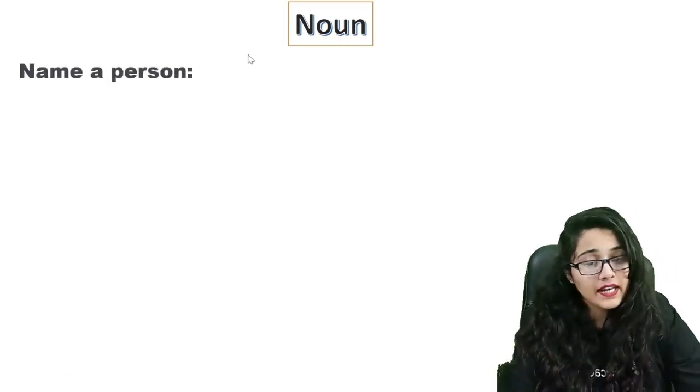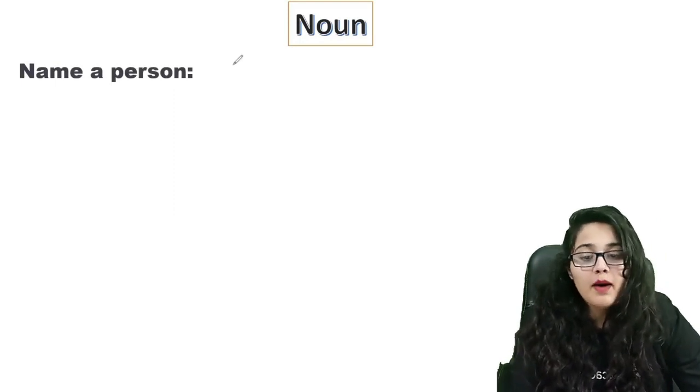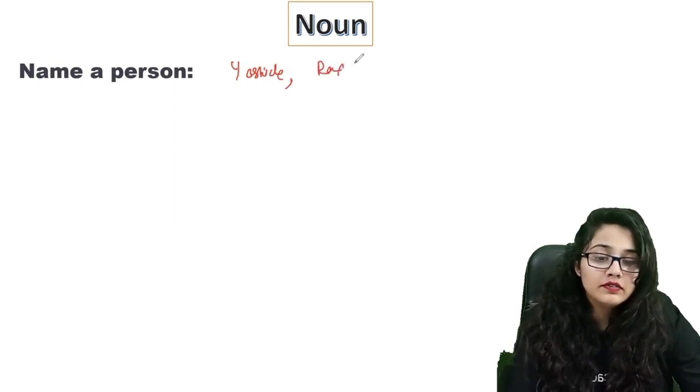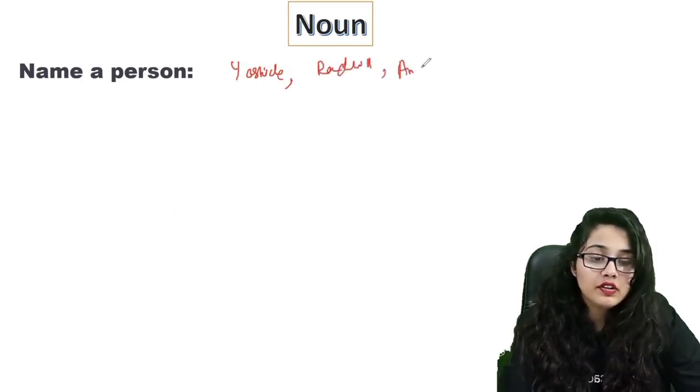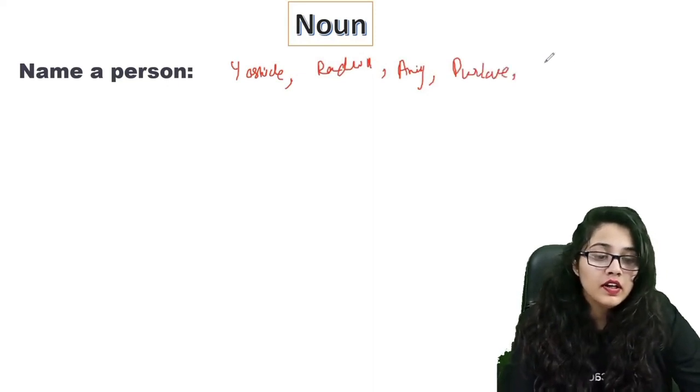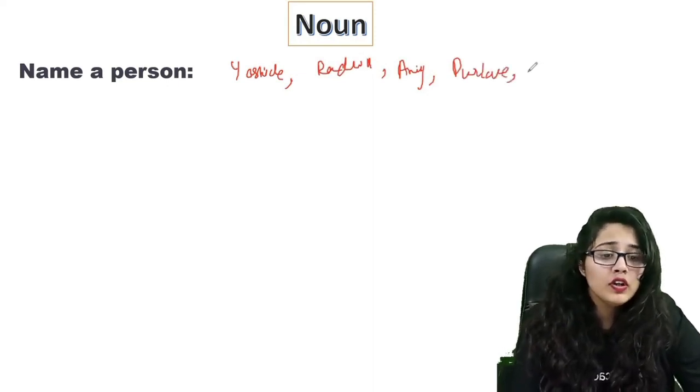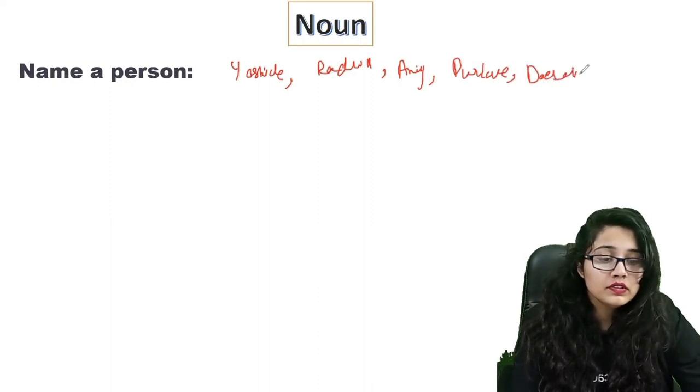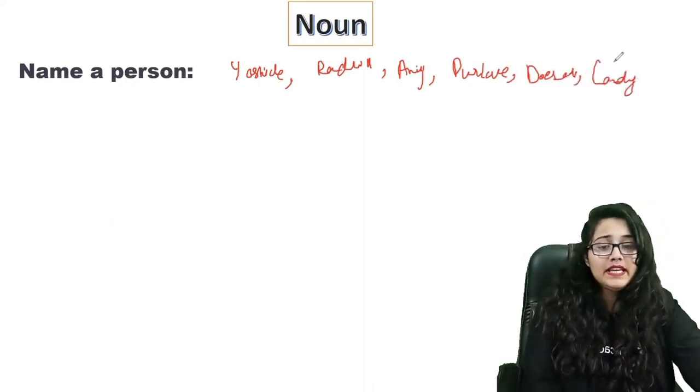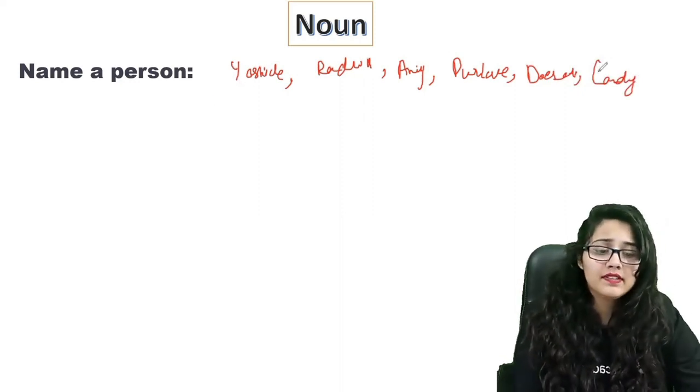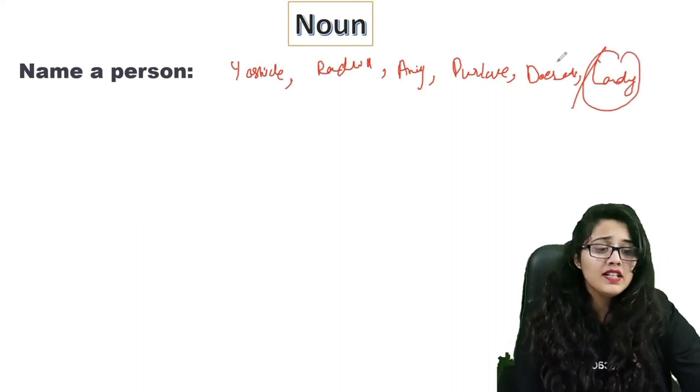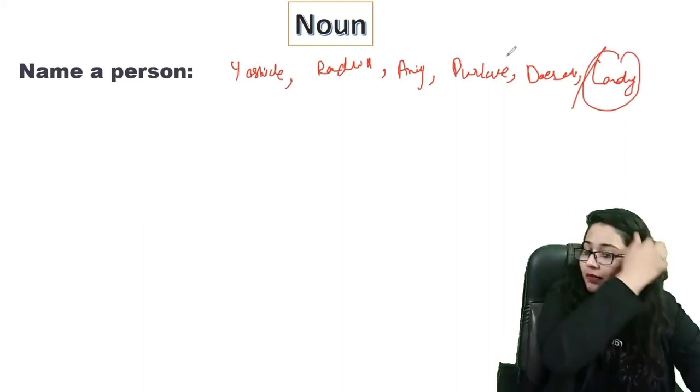We will take name of a person like Yashicha, Radhika, Anuj. We can also name animals. My dog's name is Candy. All these things are name of a person.